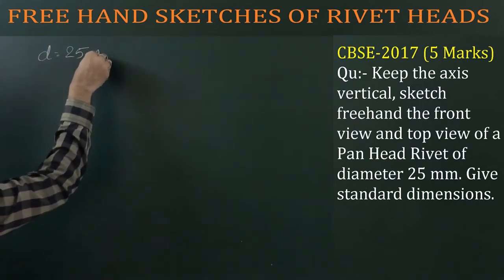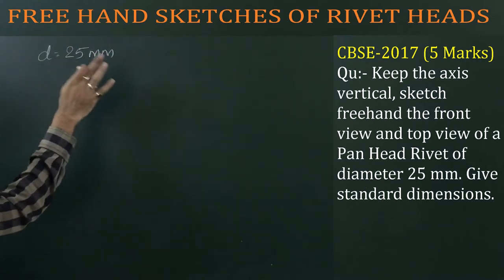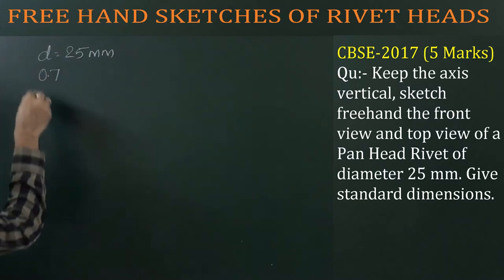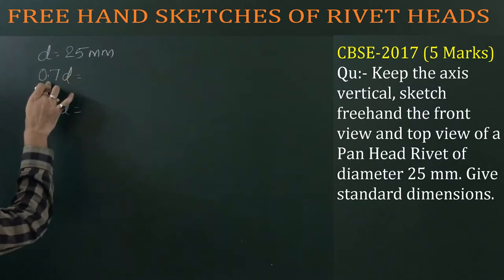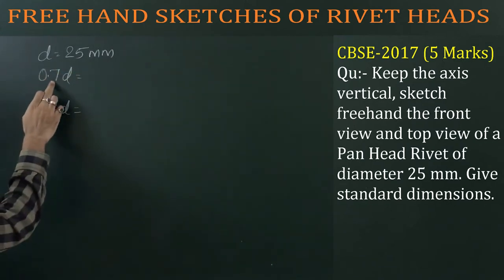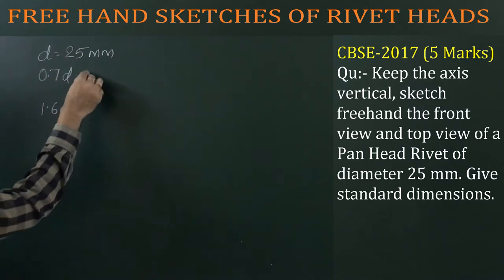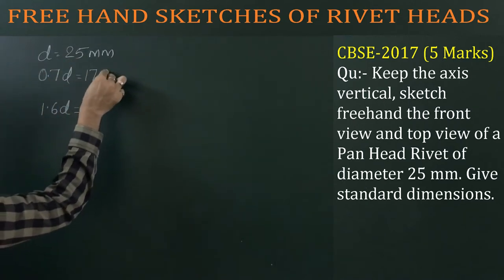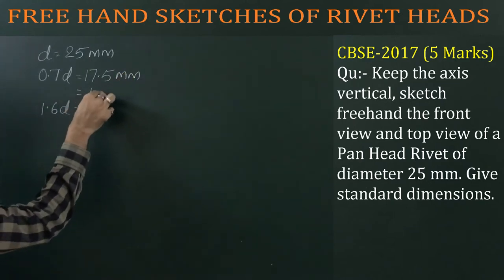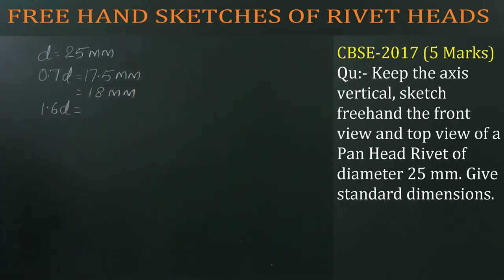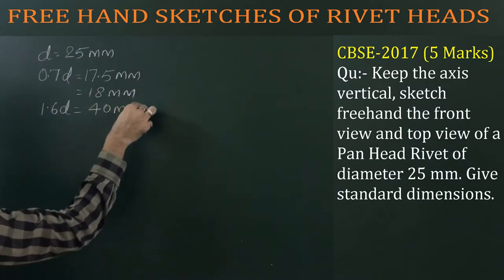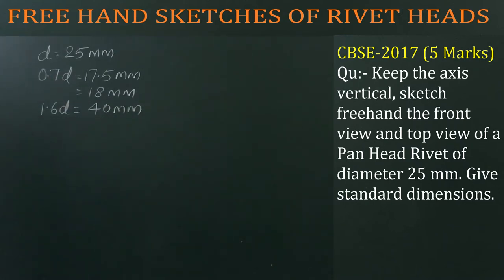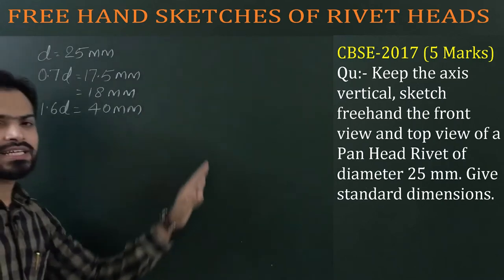The given diameter D is 25 mm. For 25 mm we have to calculate all standard dimensions. The two standard dimensions for a pan head rivet are 0.7D and 1.6D. So 0.7D for 25 mm equals 17.5 mm — for construction work we can go with 18 mm. Then 1.6D for 25 mm equals 40 mm. So the standard dimensions are D=25, 0.7D≈18, and 1.6D=40.